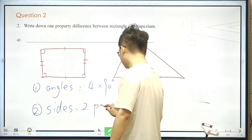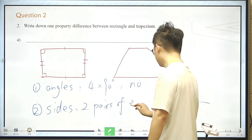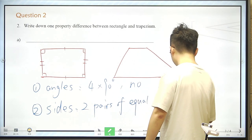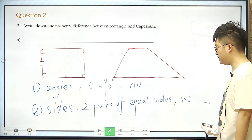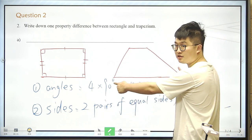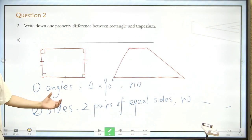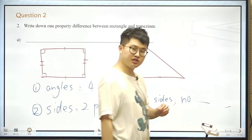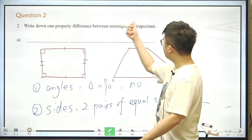But trapezium, still no. Trapezium, still no. Sometimes these two lines would be the same. Sometimes, not always. But rectangle here, this is always equal to this one.